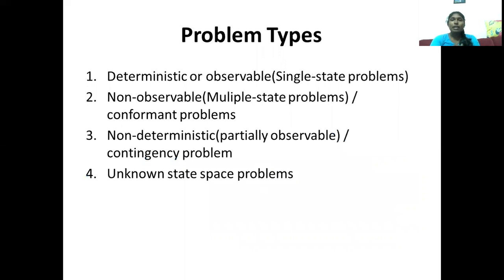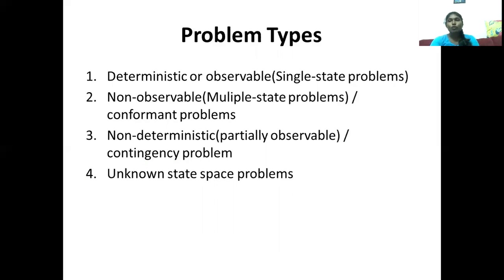As a whole, we have four different types of problems. First, deterministic or observable — where the current situation and the next step can be predicted properly. Second, non-observable — where the current state cannot be predicted properly. Third, non-deterministic or partially observable — where the current state can be predicted but the next state may have multiple possible outcomes. Fourth, unknown state-space — where we have an open space and must explore everything, as the exact information for the environment and the agent is not available. These are all the different types of problems in artificial intelligence. Thank you.